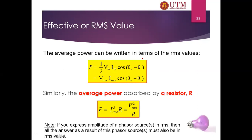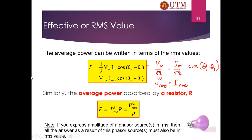This follows because V_m / √2 is V_rms and I_m / √2 is I_rms, so the (1/2) factor is absorbed. Similarly, the average power absorbed by a resistor can be expressed as: P = I_rms² × R, or equivalently P = V_rms² / R.